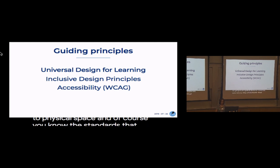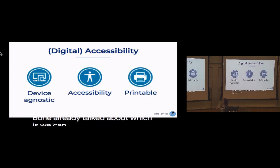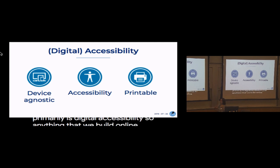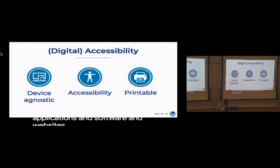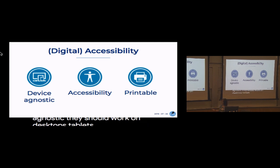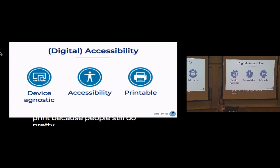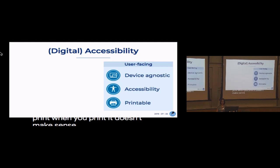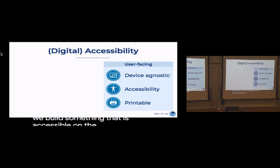What I focus on primarily is digital accessibility — anything that we build online or any applications we build for smartphones. All of our applications and websites need to be device agnostic: they should work on desktops, tablets, and smartphones. They need to comply with WCAG, and — guess what — you need to print, because people still do print. You'd be surprised how many sites don't pay attention to print styling.